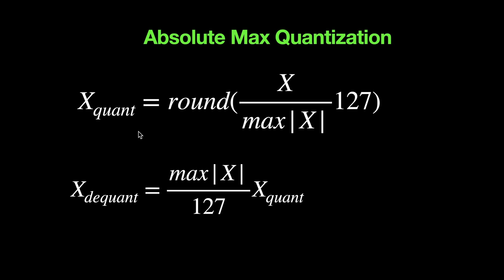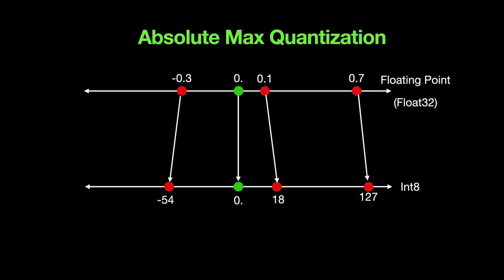The exact reverse applies for de-quantization: multiply the quantized value x_quant by the absolute max and divide by 127. For example, for input values of -0.3, 0, +1, 0.1, and 0.7: zero always maps to zero at the output, while the other values are divided by the absolute max (which is 0.7 in this case) and scaled to be between +127 and -127.